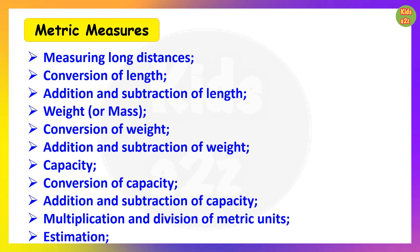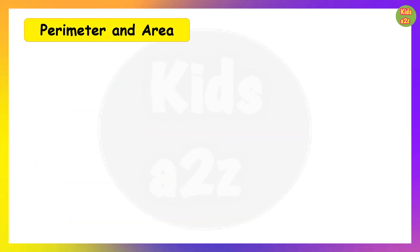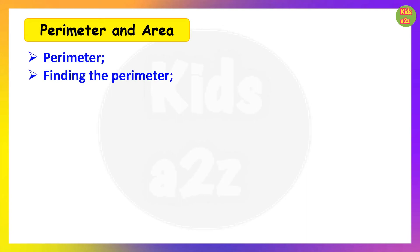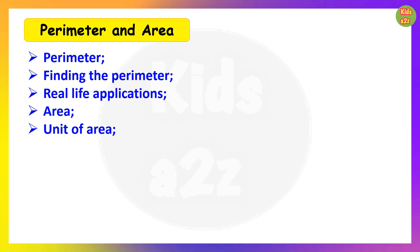Under estimation, they will learn to estimate length, weight and capacity and verify by actual measurement. Next is Perimeter and Area. They will learn to find the perimeter of triangles, rectangles, squares and other shapes, with some real life applications. For area, they will learn units of area and using half square units.